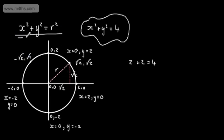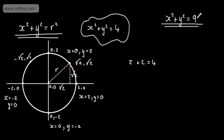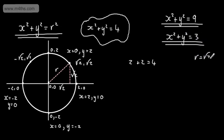This is the general form for the equation of a circle when the center is at (0, 0). For example, x squared plus y squared equals 9 gives a circle with center (0, 0) and radius 3. If we have x squared plus y squared equals 3, the radius is root 3. Be very careful — a common student error is to write the radius as 3. Remember, this value is the radius squared.